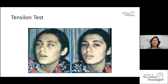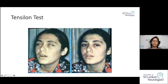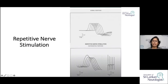When giving Tensilon, you may not need the full 10 mg — by the time you give 3 to 6 mg, you may already see the patient starting to open the eye and bulbar function improving. In repetitive nerve stimulation, there is a decrement in Myasthenia Gravis, whereas in a normal person there is no decrement in the compound muscle action potential.